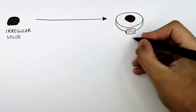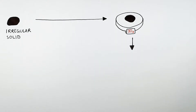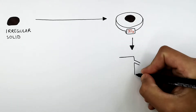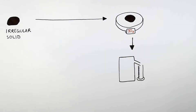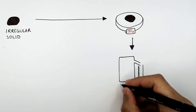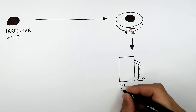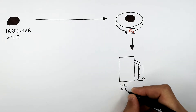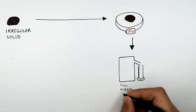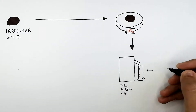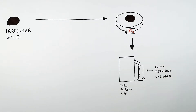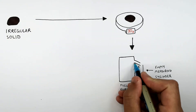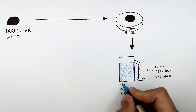But how do you work out the volume of this irregular shaped solid? What you've got here is a Eureka can and a measuring cylinder. What you need to do is fill the Eureka can to the very top so it's a full Eureka can. But the measuring cylinder must be empty. So you fill the Eureka can to the top with water.